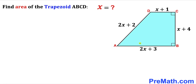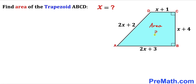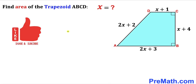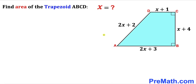Welcome to pre-math. In this video we have got trapezoid ABCD whose side lengths are represented by 2x plus 3, x plus 4, x plus 1, and 2x plus 2 respectively. Angles ABC and BCD are 90 degrees each. We are going to calculate the area of this trapezoid ABCD by finding the x value first. Let's get started with the solution.